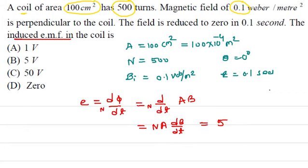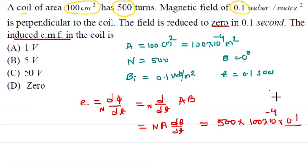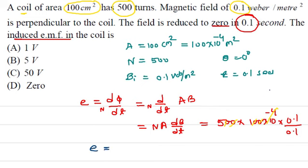Substituting: E = 500 × 100 × 10⁻⁴ × 1. The 10⁻⁴ cancels with 100, giving 500 × 100 × 10⁻⁴ = 500 × 10⁻² = 5. So the induced EMF is 5 Volts. The correct answer is 5 V.